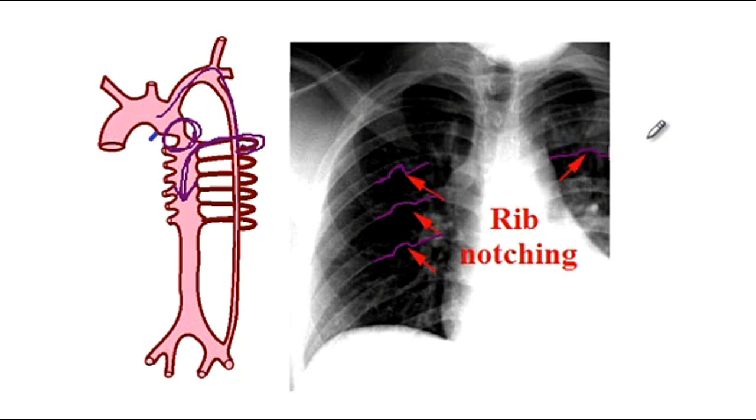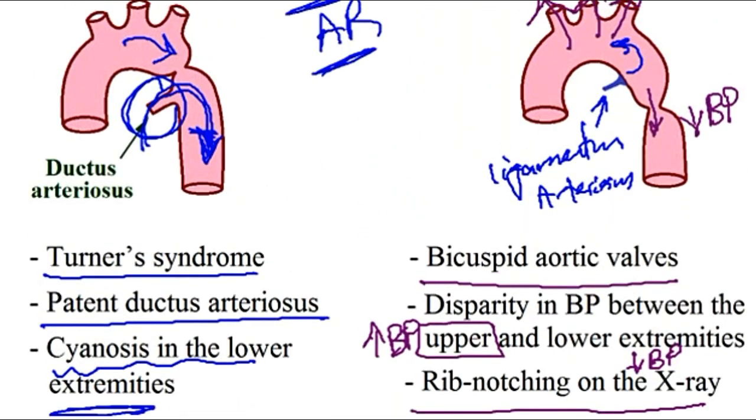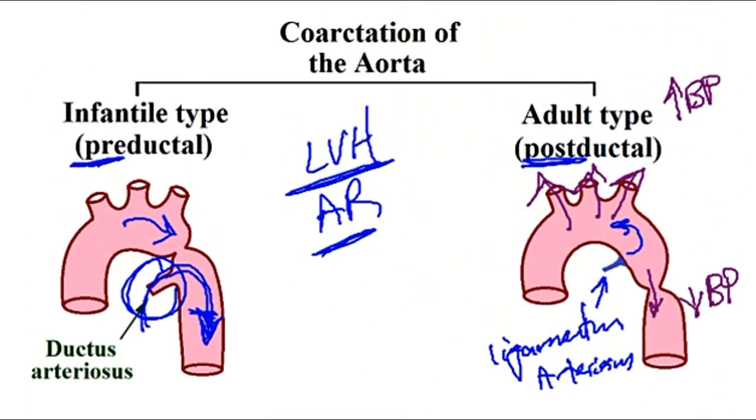That concludes our discussion of the difference between the infantile and adult type of the coarctation of the aorta.